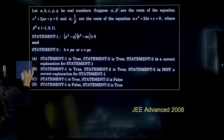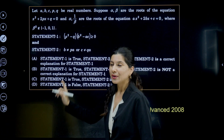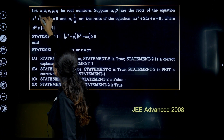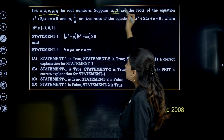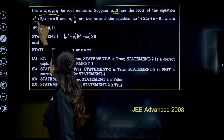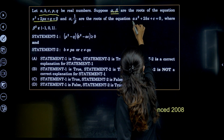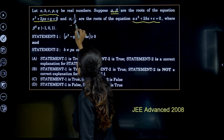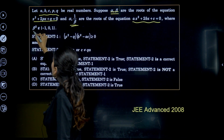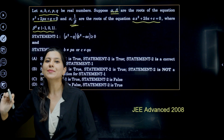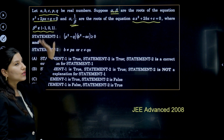The question is an assertion-reason type. A, B, C, P, Q are real numbers, and suppose alpha and beta are the roots of the first quadratic equation. The second quadratic equation has roots alpha and 1/beta. And beta squared does not belong to the set {-1, 0, 1}.